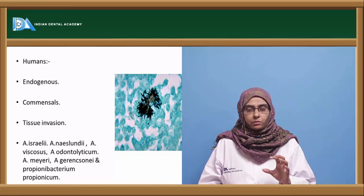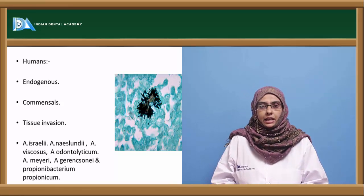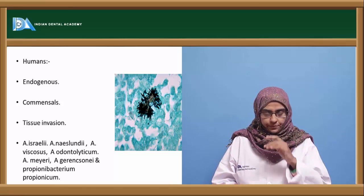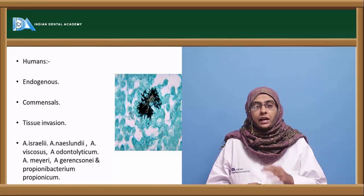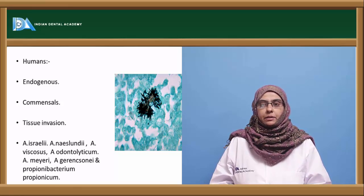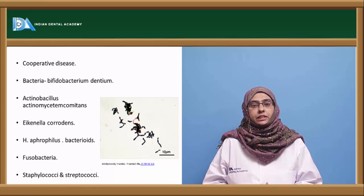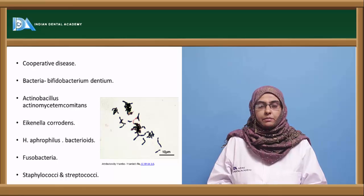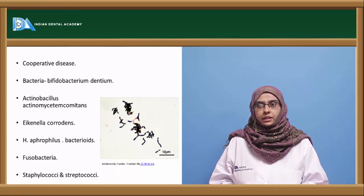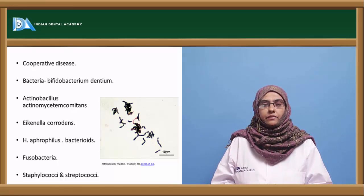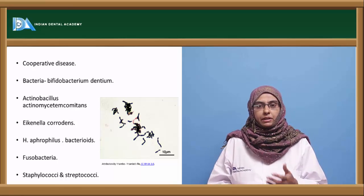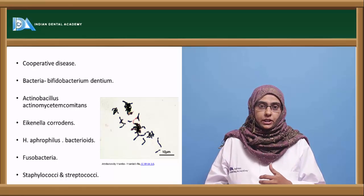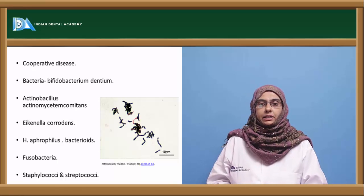The most prominent organism in actinomycosis is Actinomyces israelii; other species include A. naeslundii, A. viscosus, A. odontolyticus, A. meyeri, A. gerencseriae, and Propionibacterium propionicum. This disease is called a cooperative disease because it is not caused by a single organism but in combination with others, including Bifidobacterium, Actinobacillus actinomycetemcomitans, Eikenella corrodens, Haemophilus aphrophilus, Bacteroides, Fusobacteria, and anaerobic staphylococci.